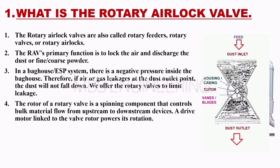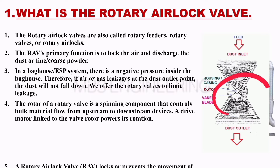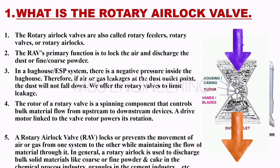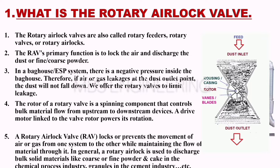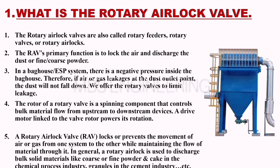The rotor of a rotary valve is a spinning component that controls bulk material flow from upstream to downstream devices. A drive motor linked to the valve rotor powers its rotation. A rotary airlock valve (RAV) locks or prevents the movement of air or gas from one system to another while maintaining material flow through it. It is used to discharge bulk solid materials like coarse or fine powder and cake in the chemical process industry, and granules in the cement industry.